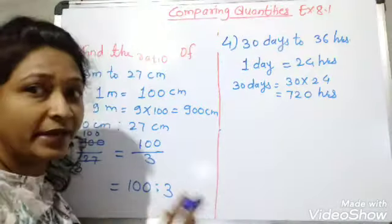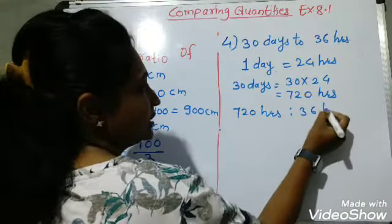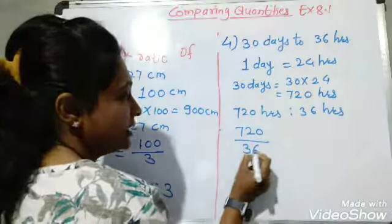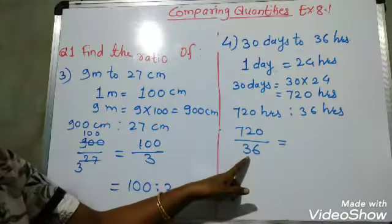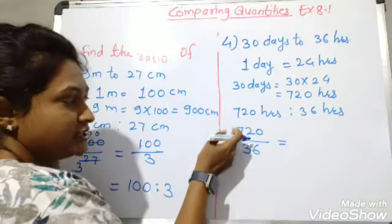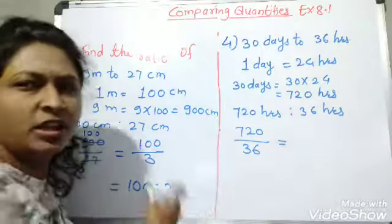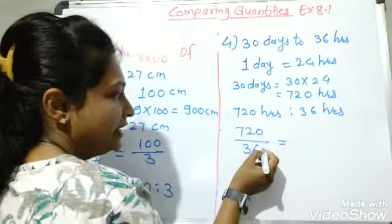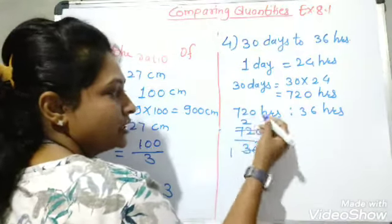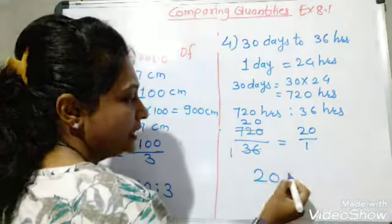Now find the ratio of 720 hours to 36 hours: write 720 upon 36. Thirty-six ones are 36 and thirty-six twos are 72, so the zero remains as it is. We get 20 upon 1, and our ratio is 20 is to 1.